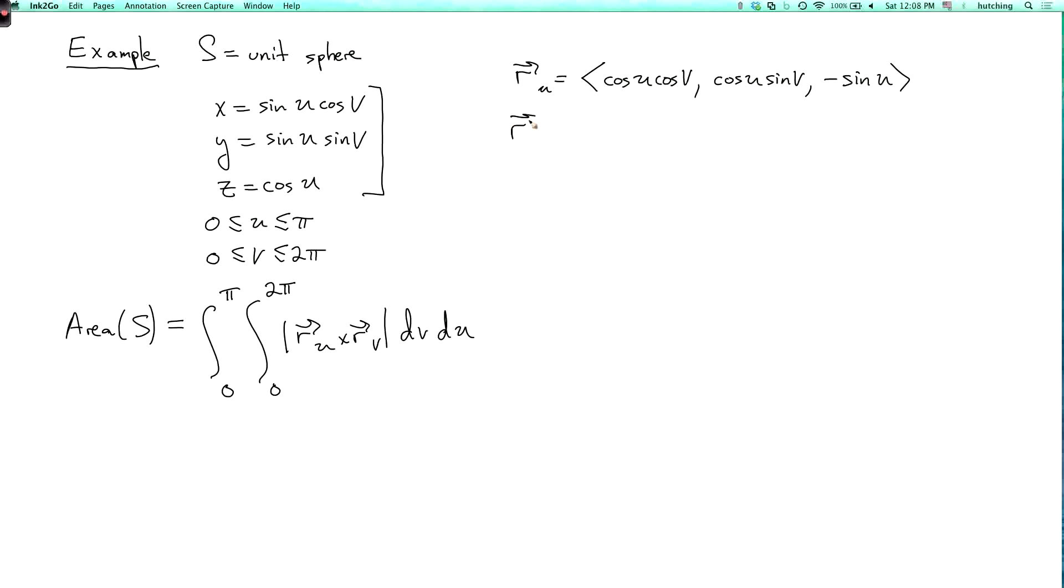While r_v is, so differentiating this, I get minus sine u sine v. Differentiating y, I get sine u cosine v. And differentiating z, I get zero.